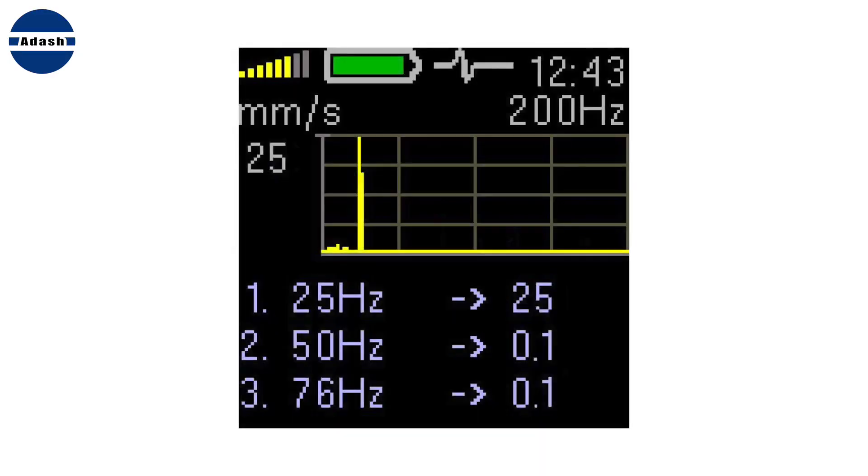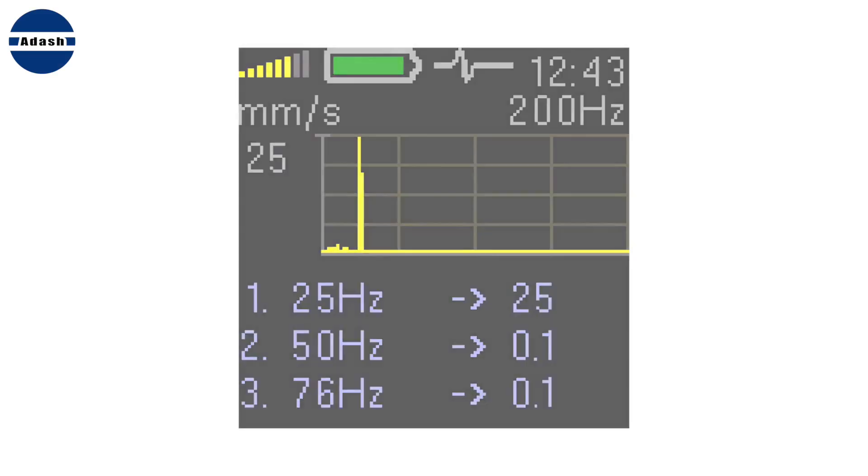The unbalance can be mechanical. Then you will do the balancing job. Or the unbalance can be electrical. Of course, only for motors. When electrical failure exists, then it also generates only one spectrum line on speed frequency. Fortunately, you can do simple test.